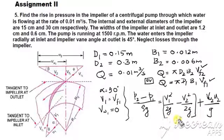Then of course minus HL. And here neglect losses through the impeller, so you are asked to neglect, so simply ignore that term. So this is the equation.